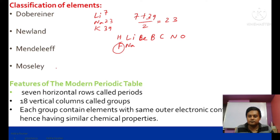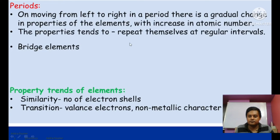Today we mainly discuss the modern periodic table. It has 7 horizontal rows called periods and 18 vertical columns called groups. Each group contains elements with the same outer electronic configuration — that is, the valence electronic configuration of all elements in a group is the same, which is why they have similar chemical properties. Moving left to right along a period, there is a gradual change in properties due to increasing atomic number.